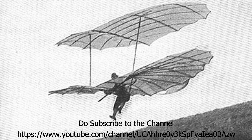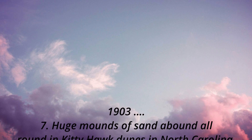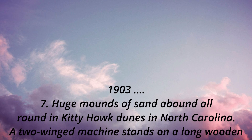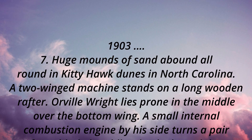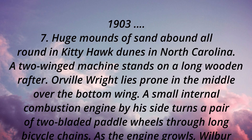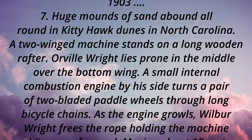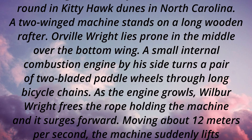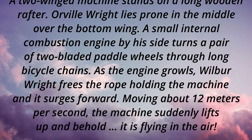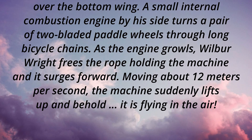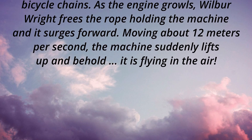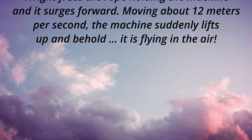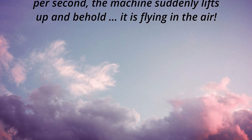1903 AD: Huge mounds of sand abound all around the Kitty Hawk dunes in North Carolina. A two-winged machine stands on a long wooden rafter. Orville Wright lies prone in the middle over the bottom wing. A small internal combustion engine by his side turns a pair of two-bladed paddle wheels through long bicycle chains. As the engine growls, Wilbur Wright frees the rope holding the machine and it surges forward, moving about 12 meters per second. The machine suddenly lifts up — and behold, it is flying in the air.